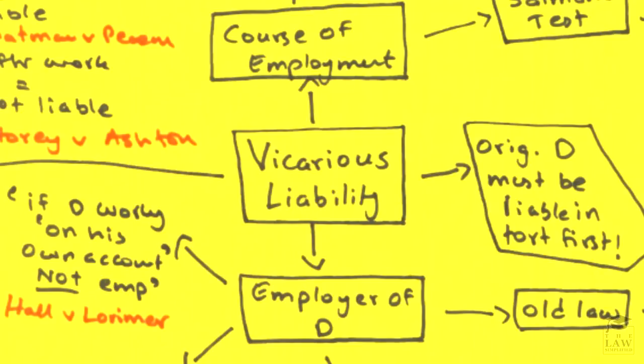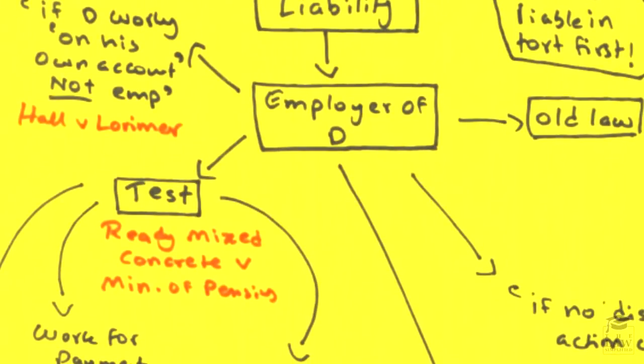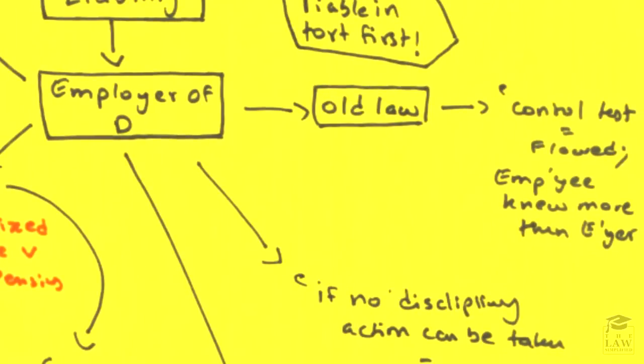Both of these elements require substantial thinking and a lot of case law and theory before it can be established that a person is in fact an employee, but it can be summarized in quite a simple manner. We'll look at each element separately. First of all, we have to determine whether the person who committed the tort is in fact an employee of the defendant. The old law was to determine if the person was under the control of the defendant, their employer.